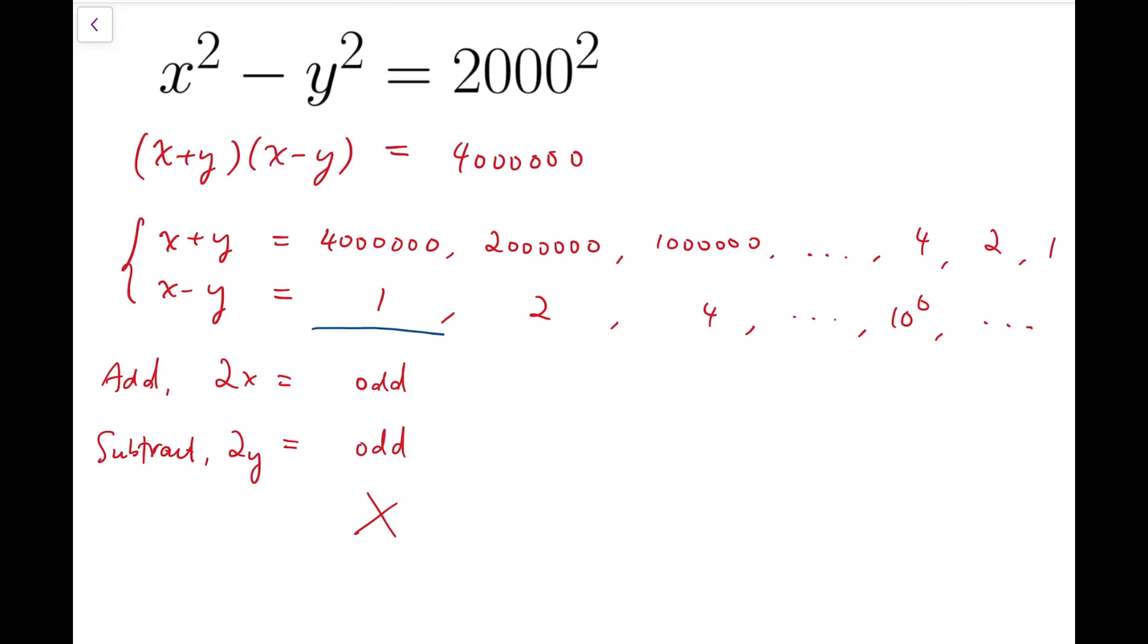From this, we know that there is actually some restriction on the parities of x plus y and x minus y, which is that they have to be either both odd or both even. And we know that we can't have both odd because the product has to be 4 million, so they have to be both even.